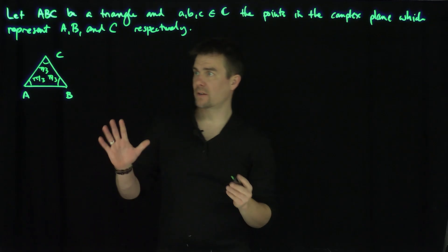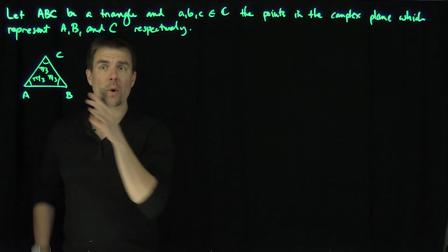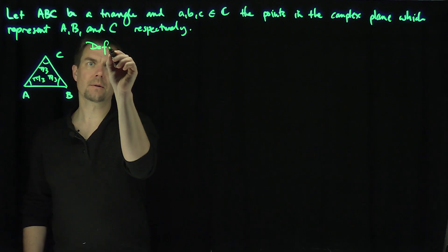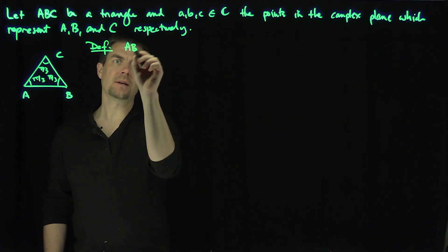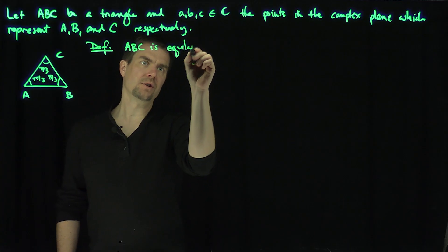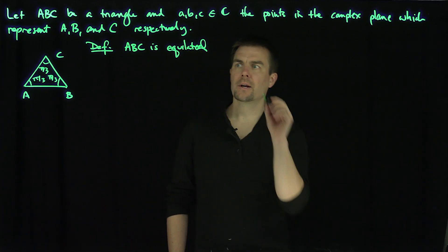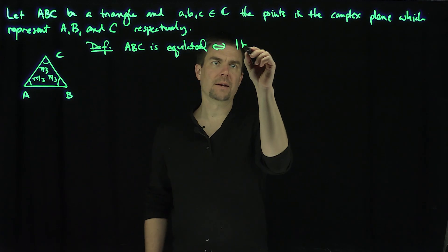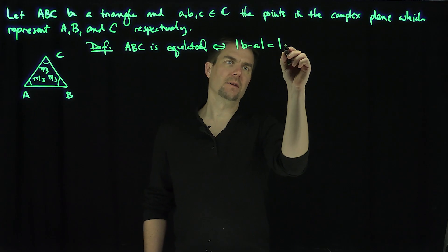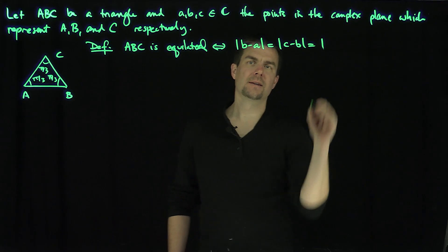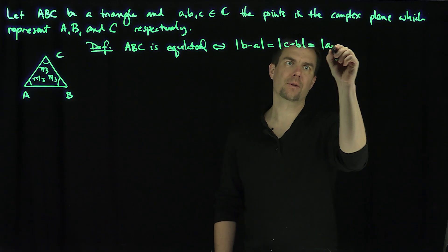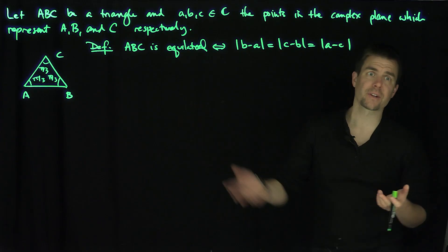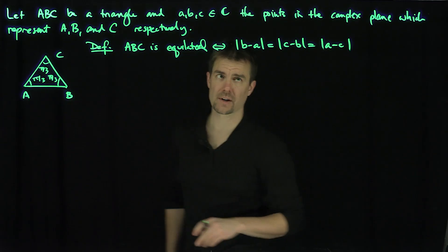Let's recall the definition: ABC is equilateral, just as in ordinary high school geometry, if and only if |B − A| = |C − B| = |A − C|. In other words, all side lengths are equal. The law of sines and law of cosines will then tell you the angles must be equal as well.